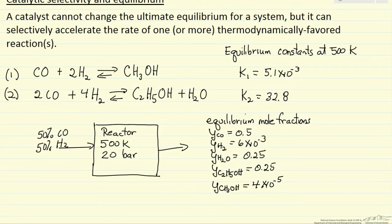Here's the case if we feed a 50-50 mixture of CO and hydrogen to a reactor at 500 Kelvin. Typically we carry out these reactions at higher pressures, in this case 20 bar, because for gas phase reactions where the number of moles is decreasing, higher pressures are going to favor the products.